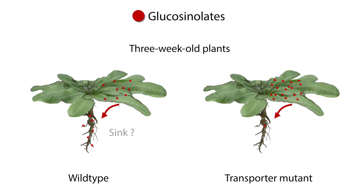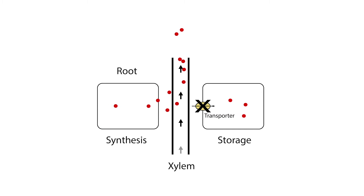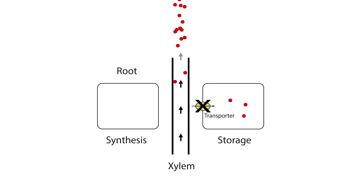This made us think that the roots were a sink for these glucosinolates before bolting. But that wasn't the case. In fact, the roots were making these glucosinolates, and when the transporters were not there, they were rushed via the xylem up to the rosette where they were then stuck. This ascribed an additional function for the transporters, which was storage of a certain type of glucosinolates in the roots.